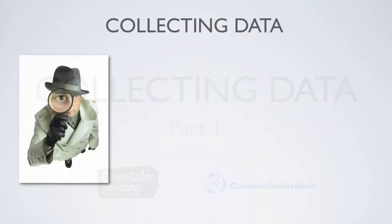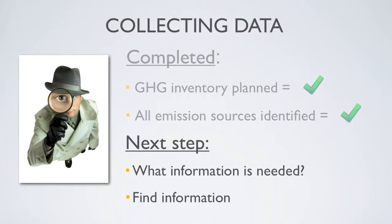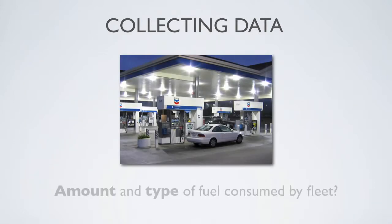Once the greenhouse gas inventory has been planned and all emission sources have been identified, the next step is deciding exactly what information needs to be gathered and finding out where that information is located. Determining which information is needed is generally the easy part. For example, to quantify emissions from a corporate vehicle fleet, one needs to know the amount and type of fuel consumed by the fleet.